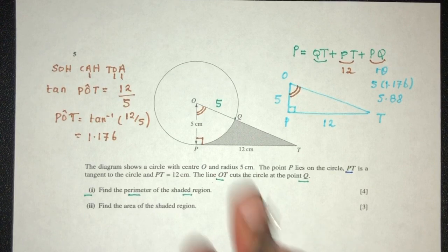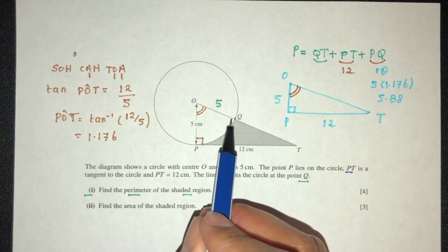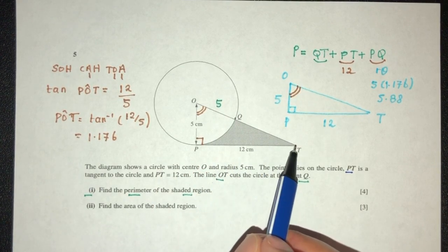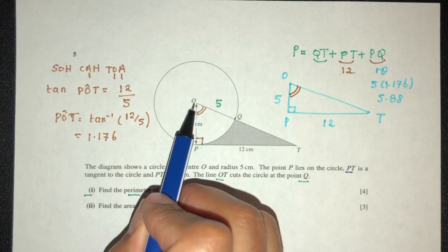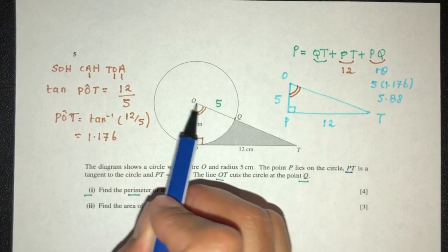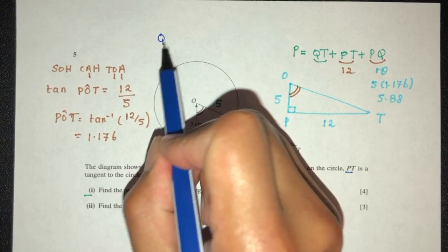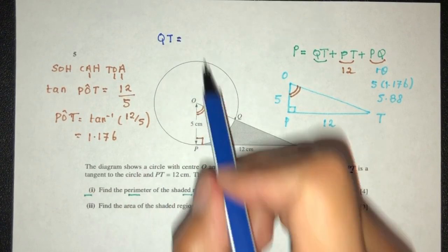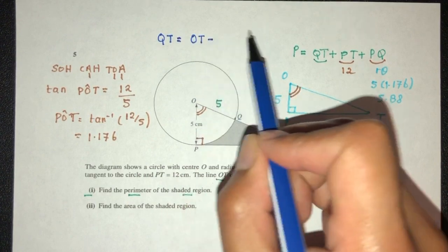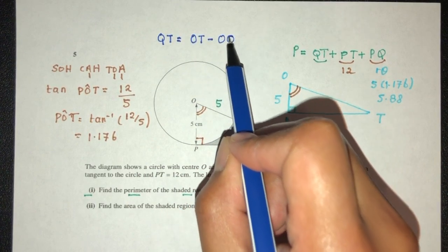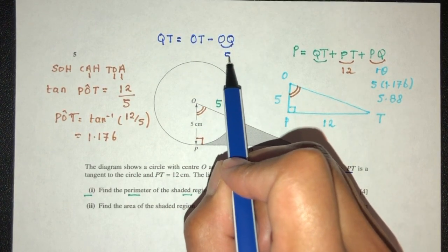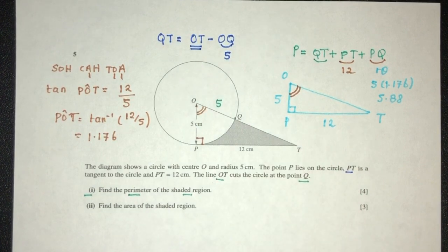Now what is the value of QT? QT is this part. Now we understand that to find QT, we must first find OT and then minus OQ to get QT, obviously. So to find QT, we must first find OT minus OQ. OQ is a value of 5. Now we have to find OT. Now what is OT?